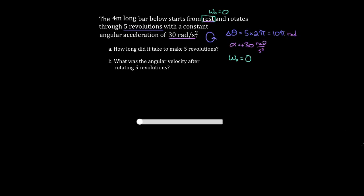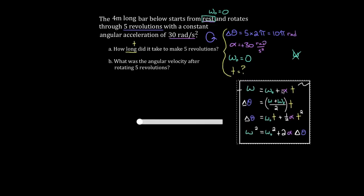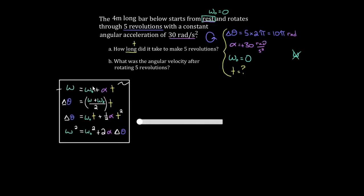We want to know the time, so that's our unknown. We have three knowns — delta-theta, alpha, and omega-initial — and the variable left out is omega-final. To figure out which kinematic formula to use, I identify which variable is not involved at all. Omega-final is not involved here. So I look for the rotational kinematic formula that does not include omega-final. The first two formulas have omega-final, so I don't want those. The third formula has no omega-final, so I'll use that one.